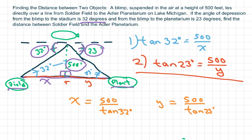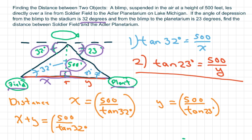So what we're going to do is we need to add our X and our Y, because we're looking for the distance. So my X plus Y equals 500 over tan of 32 degrees plus my Y, which is 500 over tan of 32 degrees.